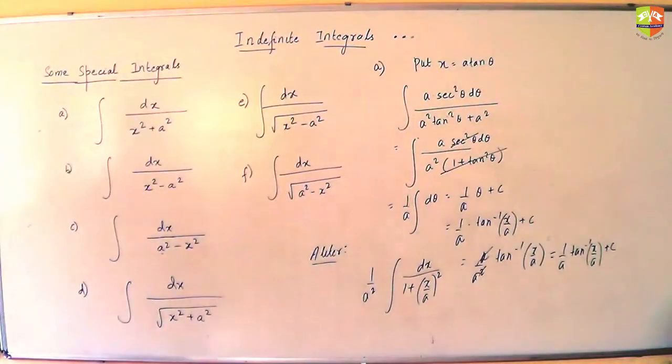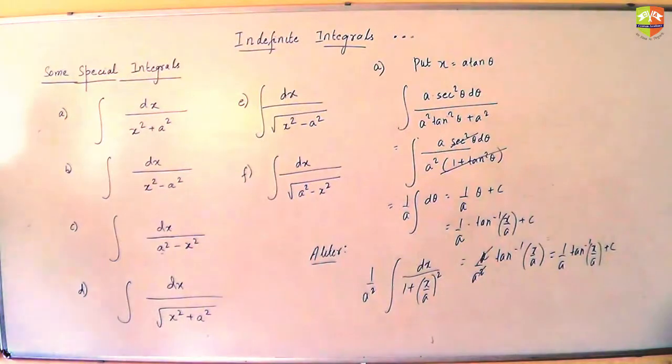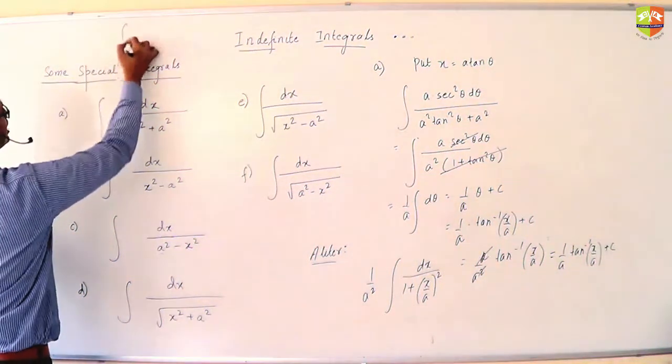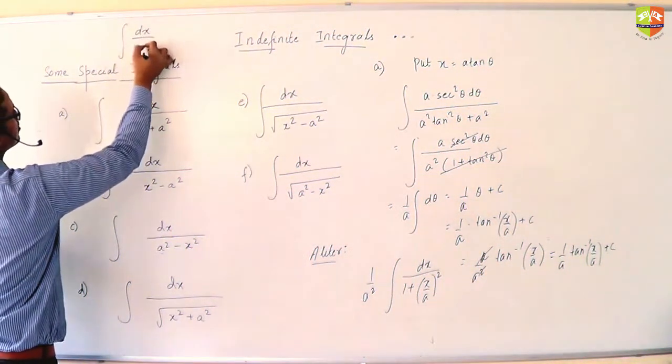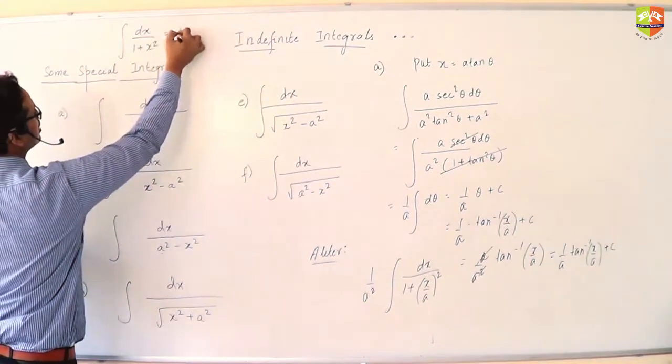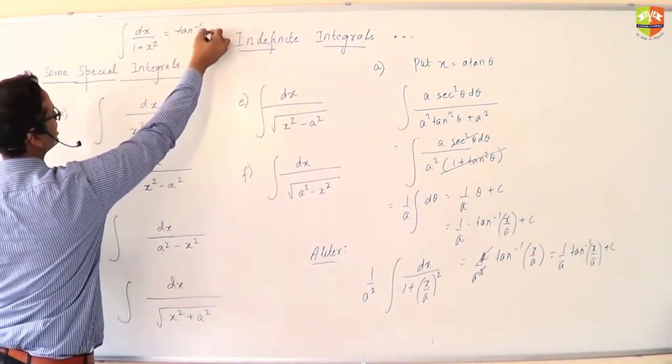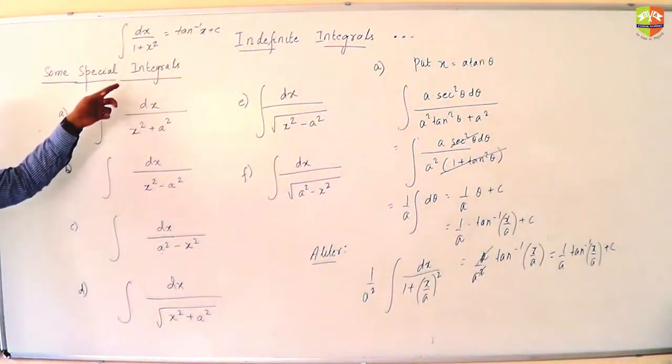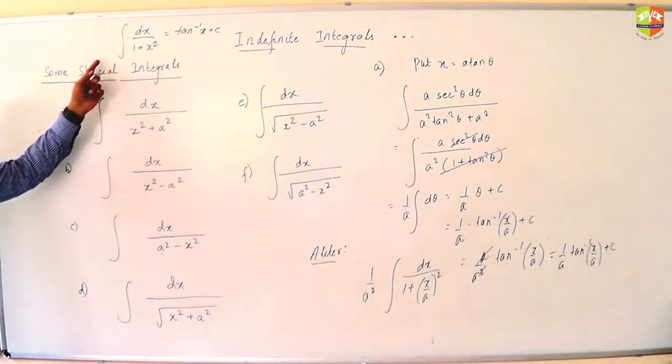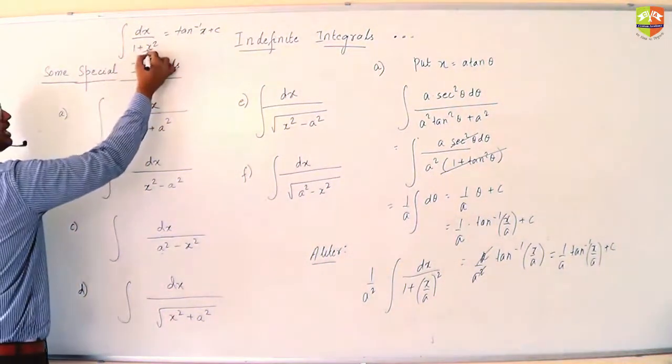So going forward this result should be known to you. Integral 1 by x squared plus a squared is given as 1 by a tan inverse x by a. In the alternate method, I use this integral which I discussed in the beginning of the chapter. Refer to your beginning part of the chapter, first set of formulas.